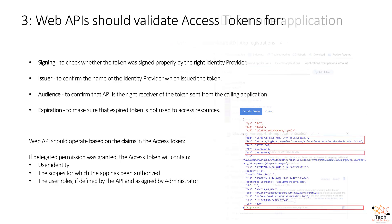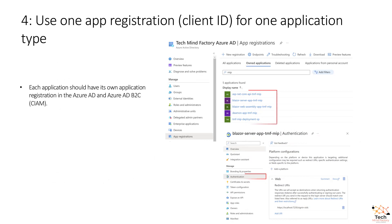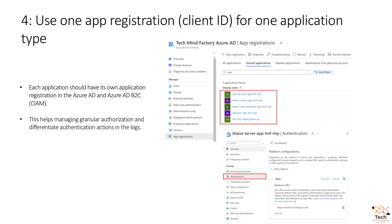Next recommendation: use one app registration client ID for one application type. Each application should have its own application registration in Azure AD and Azure AD B2C CIAM. This helps manage granular authorization and differentiate authentication actions in the logs. It's easier to manage permissions, applications, and roles.